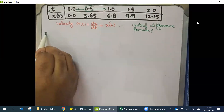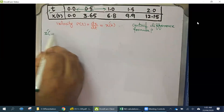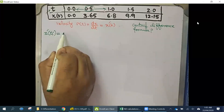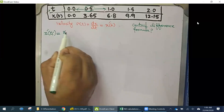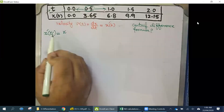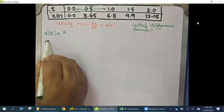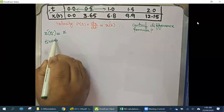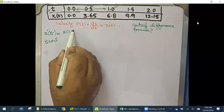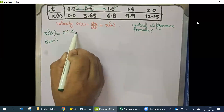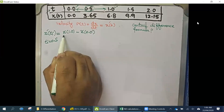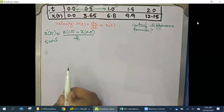We need to calculate x'(t_i) using the previous value and the future value. When t_i = 0.5, the future value corresponds to t = 1.0 and the previous value corresponds to t = 0.0. So the formula gives x(1.0) minus x(0.0) divided by 2h.